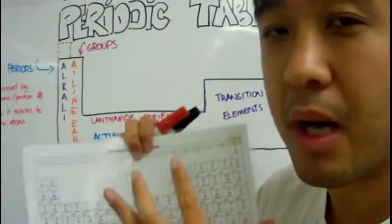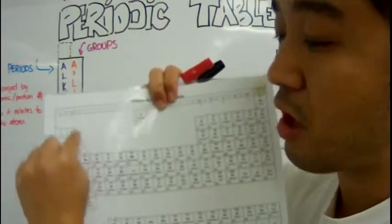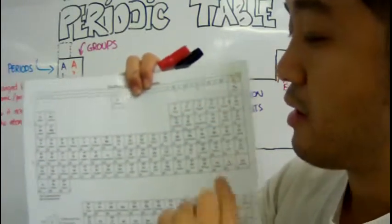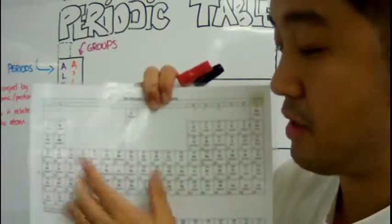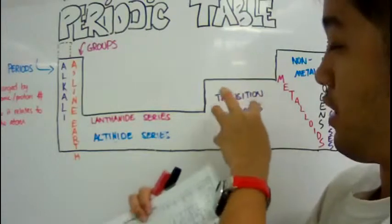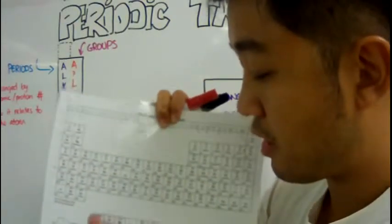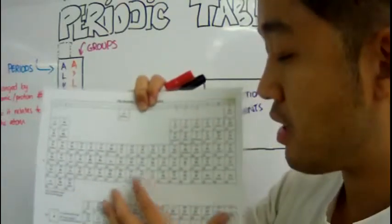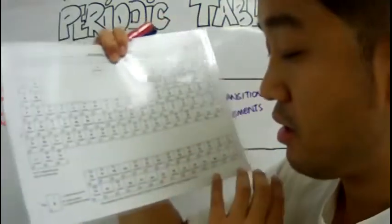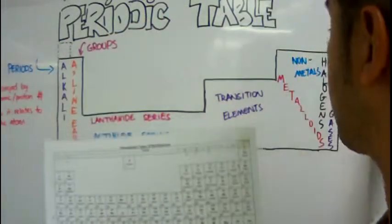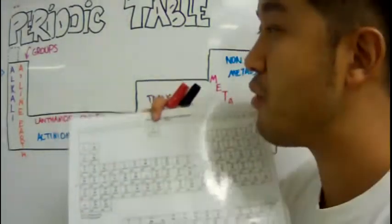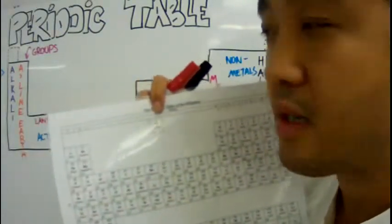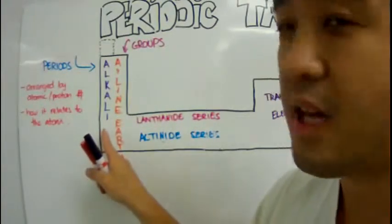The periodic table is categorized into two types of elements: the main group or main block elements, which are the really tall sections on the left and right, and then you have the transition elements in the middle section. Then you have the lanthanide and actinide series down at the bottom — we don't generally focus on those at this level. The first group is called the alkali metals.